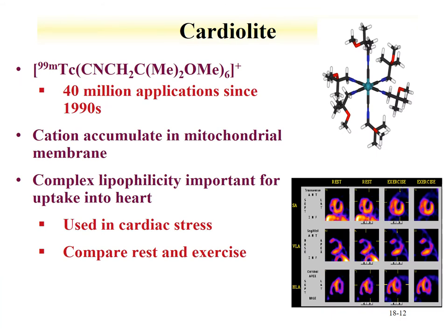An example of an imaging agent is Cardiolite. This cationic technetium compound accumulates in the myocardial membrane, and there have been 40 million applications of Cardiolite since the 1990s. It is used to see how well heart muscle behaves — comparing uptake and behavior of the mitochondria in rest and exercise modes — and is used in cardiac stress tests to determine the health of the heart.